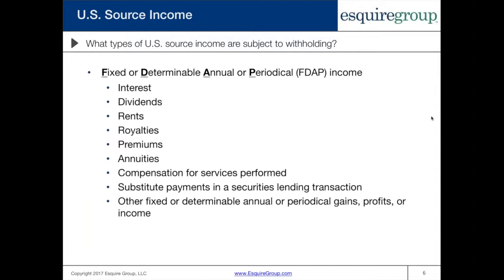What types of U.S. source income are subject to withholding? This is referred to as FDAP income — fixed or determinable annual or periodic income. This includes but is not limited to interest, dividends, rents, royalties, premiums, annuities, compensation for services performed, substitute payments in a securities lending transaction, as well as other fixed or determinable annual or periodic gains, profits, or income.